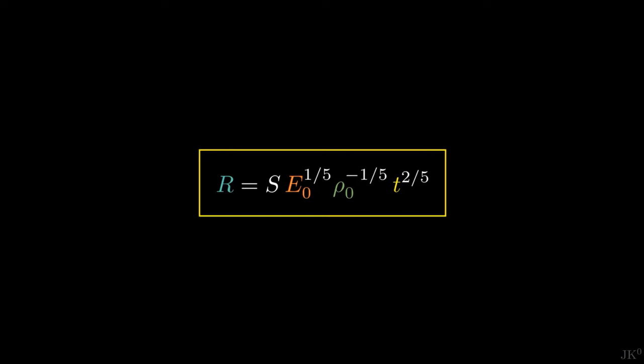In the previous video, I showed you how to determine a general formula for the radius of a nuclear blast, discovered by G.I. Taylor and independently by John von Neumann.